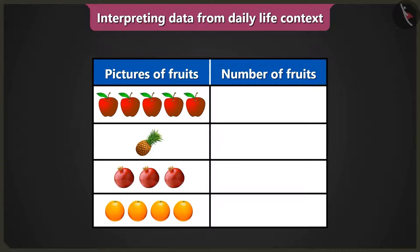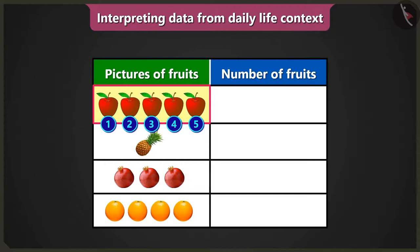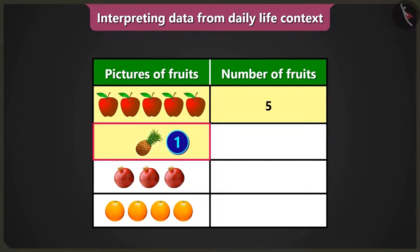Now have you understood that the data given is about which fruits? But how will I know the number of fruits without counting them? It is easy. How many pictures of apples are given in this table? There are five pictures of apples. So we have to write the number of apples, five, in the column of number of fruits. Similarly, there is one picture of pineapple, so we have to write the number of pineapples, one, in the column of number of fruits.